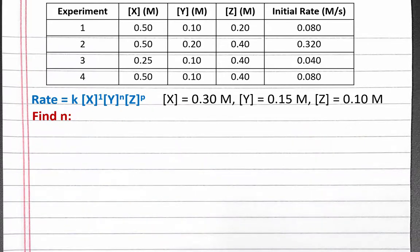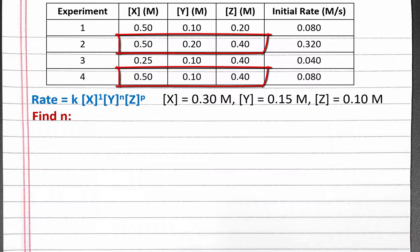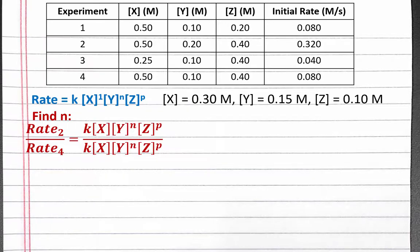Next, we'll find n. If we look at the starting concentrations in our table, in experiments 2 and 4, the only initial concentration that changes is the concentration of Y. So we'll write out the ratio of the rate laws substituting in our values for reactions 2 and 4. Instead of going through all of the math steps, let's reason out what n should be since our numbers are very clean. On the left, we have the ratio of initial rates, which is 4 when we plug in our numbers from the table. Our rate is quadrupled. The only change we made when we went from experiment 4 to experiment 2 is that we doubled the concentration of Y.